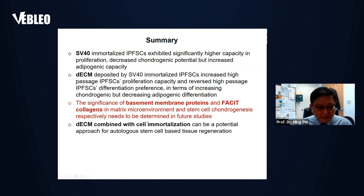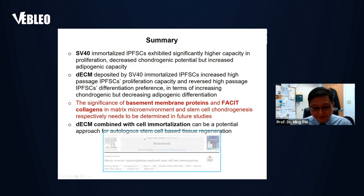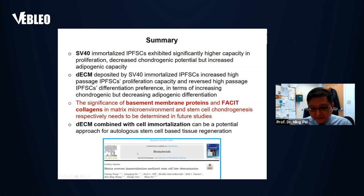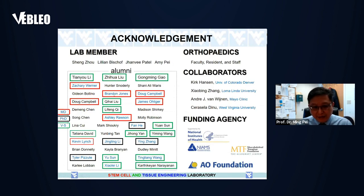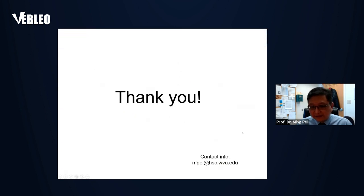These studies are still ongoing. In summary: SV40-immortalized IPFSC shows significantly high capacity in proliferation, decreased chondrogenic potential, but increased adipogenic capacity. DECM deposited by SV40-immortalized IPFSC increases aged IPFSC proliferation capacity and reverses aged IPFSC differentiating preference by increasing chondrogenic and decreasing adipogenic differentiation. DECM combined with cell immortalization can be a potential approach for autologous stem cell-based tissue regeneration. Our studies are supported by NIH, MTF, and OREF Foundation. Thank you for your attention.